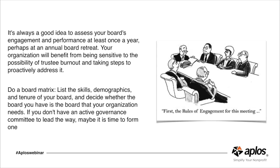Another great idea is to do a board matrix — list the skills, demographics, and tenure of your board, and decide whether the board you have is the board your organization needs. Did you just fill 12 seats because your bylaws said so, or are you finding people that fit the various needs of the organization? If you don't have an active governance committee, maybe it's time to form one. Governance involves one or two people on the board looking at things like term limits, responsibilities, and even job descriptions for board members.